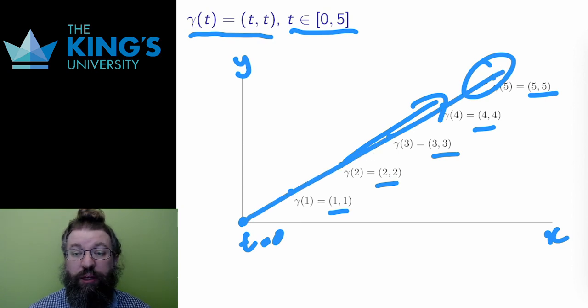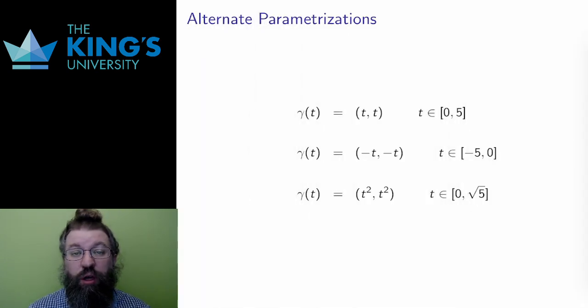One major difference between plane curves and parametric curves is that, for parametric curves, the same shape can be expressed in many different ways, because there are many different rates of movement along the same shape.